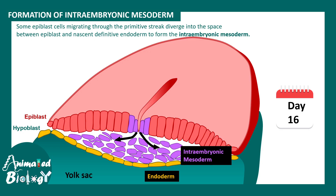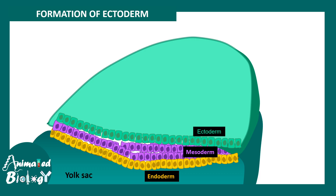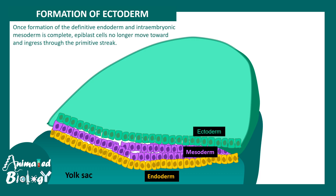Some of the epiblast cells migrating through the primitive streak diverge into the space between the epiblast and the definitive endoderm, forming the intraembryonic mesoderm. These cells shown in violet are going to give rise to the mesoderm. Finally, once the formation of the definitive endoderm and intraembryonic mesoderm is complete, epiblast cells no longer need to migrate through the primitive streak, and they eventually give rise to the ectoderm layer. Thereby, three germ layer formation is complete.